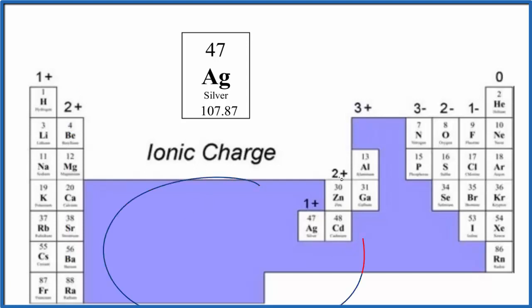We skip the transition metals here in general, but silver is an exception. Silver is a transition metal, but it has a 1+ ionic charge. So this is a good one to remember. It's an exception to the transition metals, which normally have variable charges.